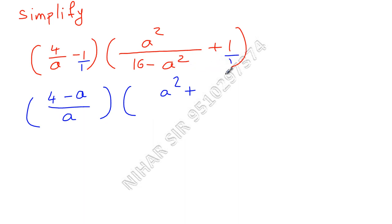denominator, LCM that is 16 minus a squared. Now this plus a squared minus a squared cancelled. Here I will copy this: 4 minus a upon a. And here you can say 4 upon 4 minus a whole squared, isn't